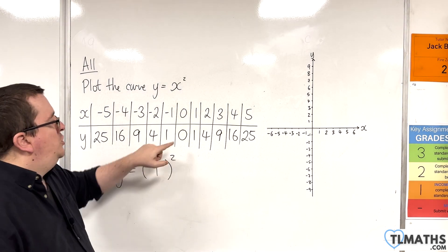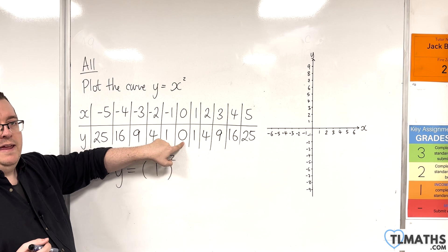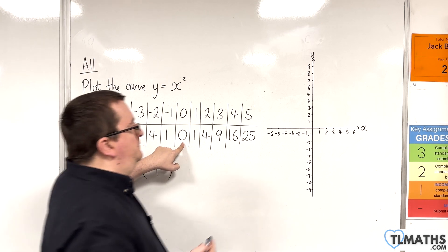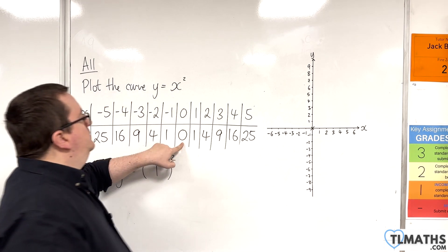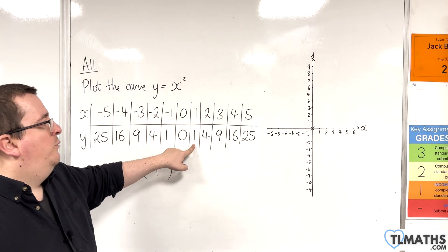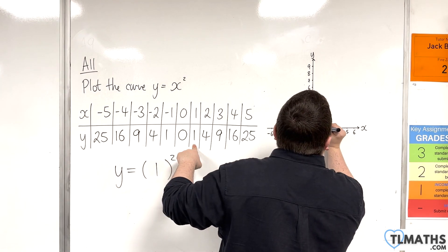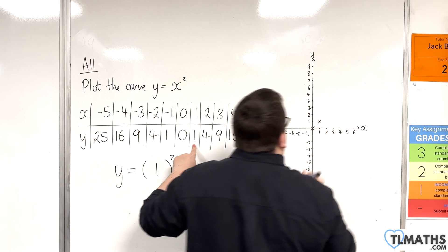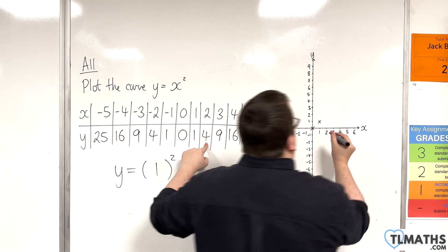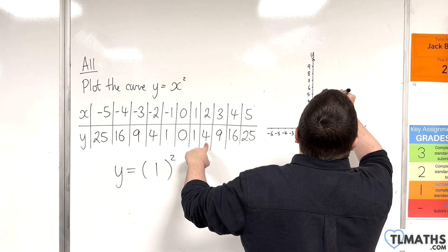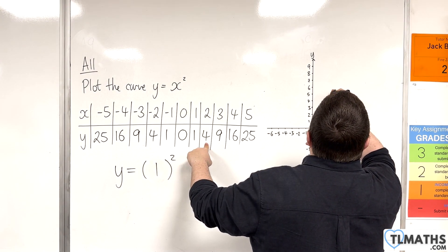So, what I'm going to do is I'm actually going to start from this point here: 0, 0. So, it goes through the origin. Then, we have 1, 1. So, 1, 1 is there. Then, we have 2, 4. So, 2, 4 is there.